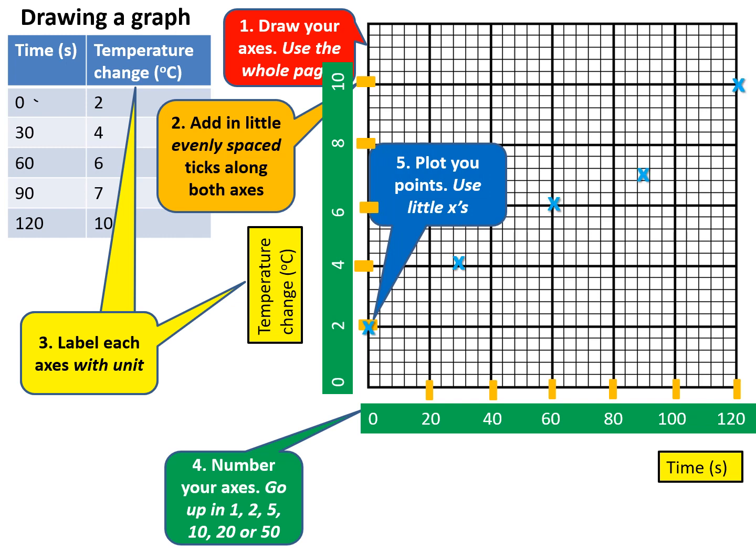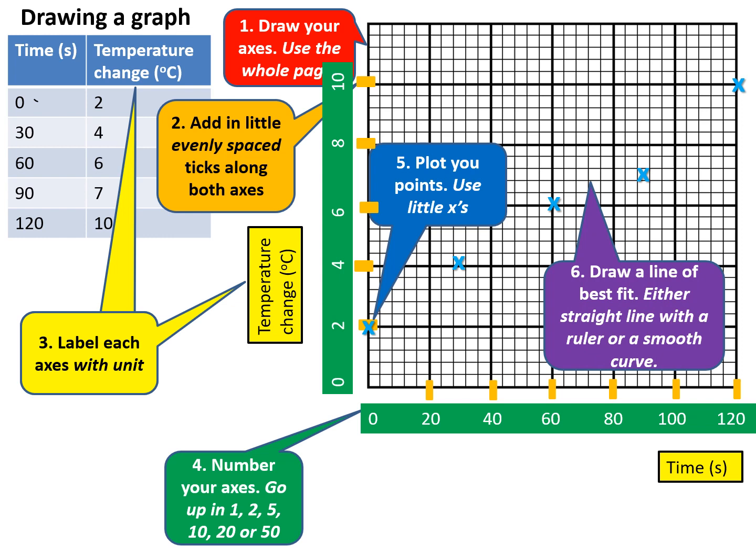I've plotted the data - at 0 seconds it's 2 degrees, at 30 seconds it's 4 degrees, and so on. Next, draw the line of best fit. This confuses some students who assume it means a straight line, which is incorrect. Line of best fit means a line going through most points. The point that doesn't fit gets circled - it's called anomalous data in science and odd data in maths.